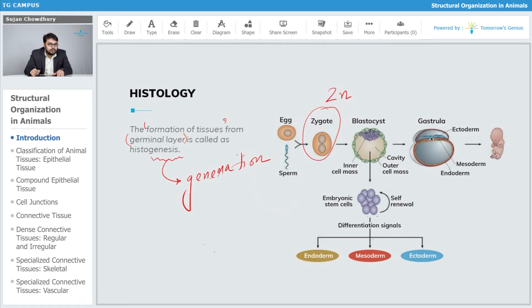The zygote slowly divides and differentiates to form blastocyst, blastula stage, then gastrula stage.